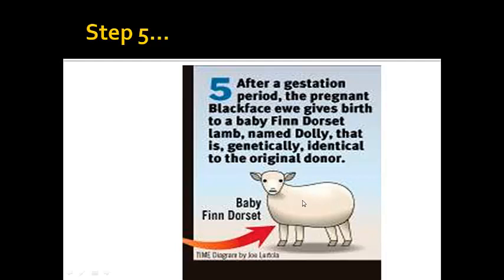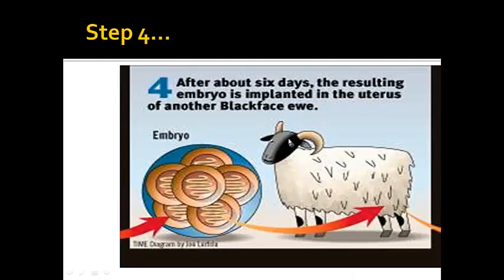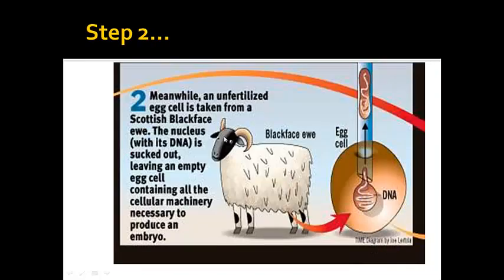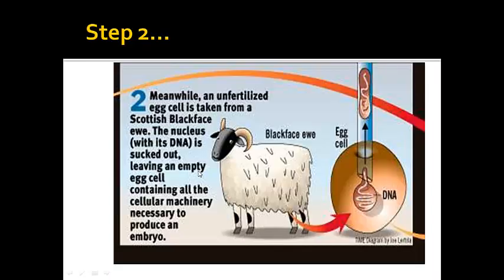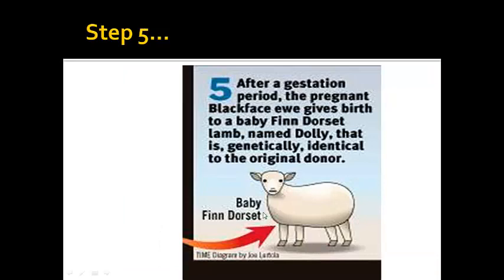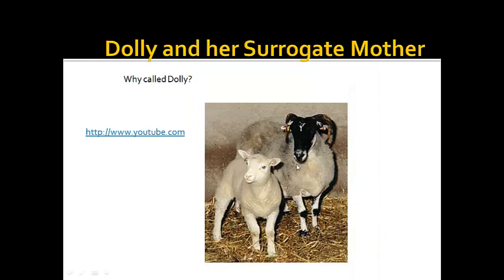Now look at the sheep. This is the uterus the sheep developed in, this is the empty cell, and this is where we got the nucleus. So what did the sheep look like? The sheep looks like the cell that we got the nucleus from. Here's Dolly — here is the mother in the sense of the uterus she came out of. Notice she does not look anything like it. What she looks like is the sheep where we got the cell from.